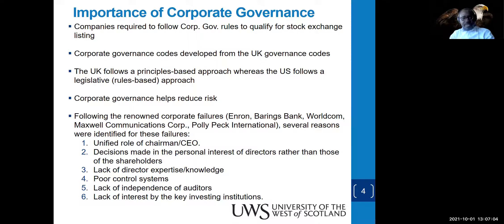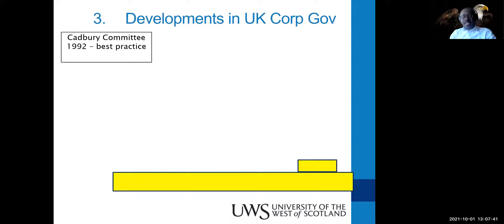Corporate governance helps in reducing risk and risk management. Looking at the failures, among other causes, they identified: the unified role of CEO and chairman, decisions made in the personal interest of directors rather than shareholders, people lacking expertise and knowledge, poor controls or controls that were bypassed, and the independence of auditors being questioned, along with a lack of interest from key investing institutions.